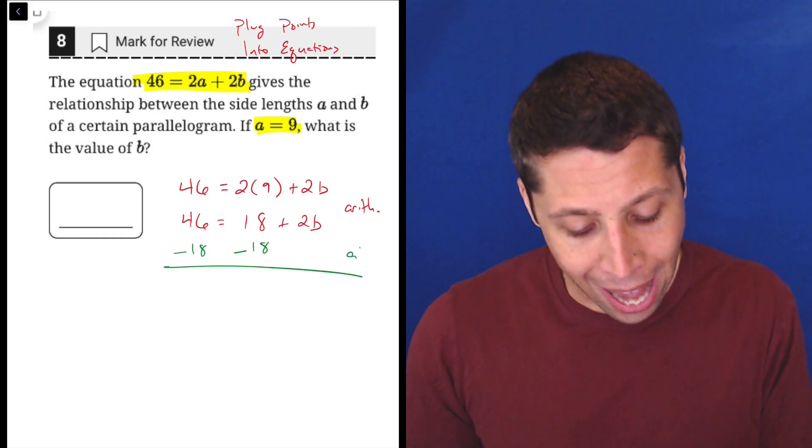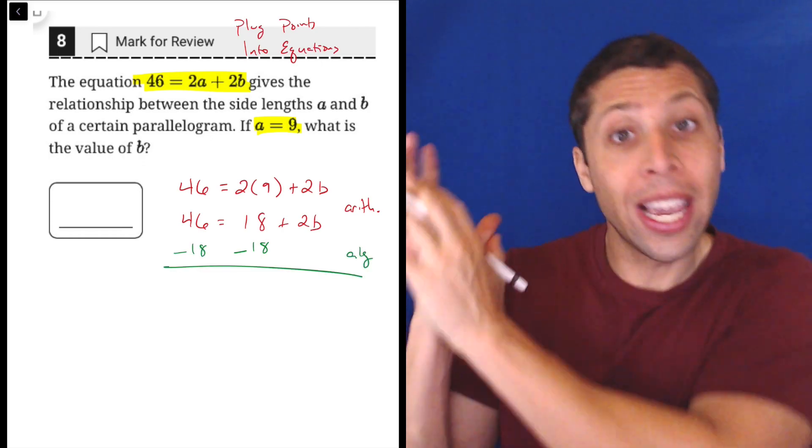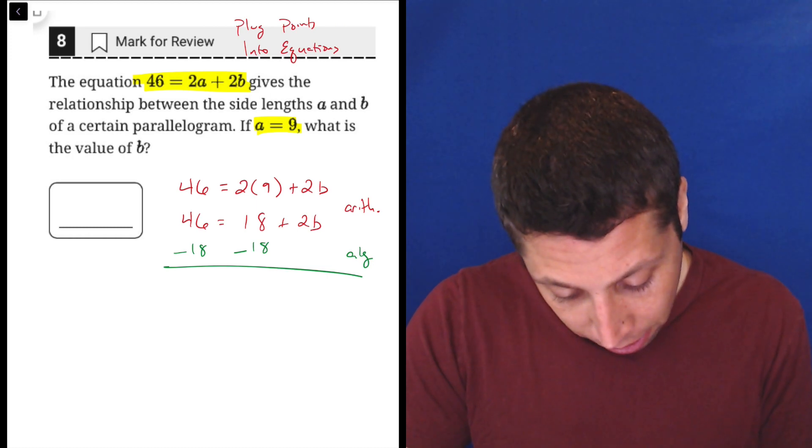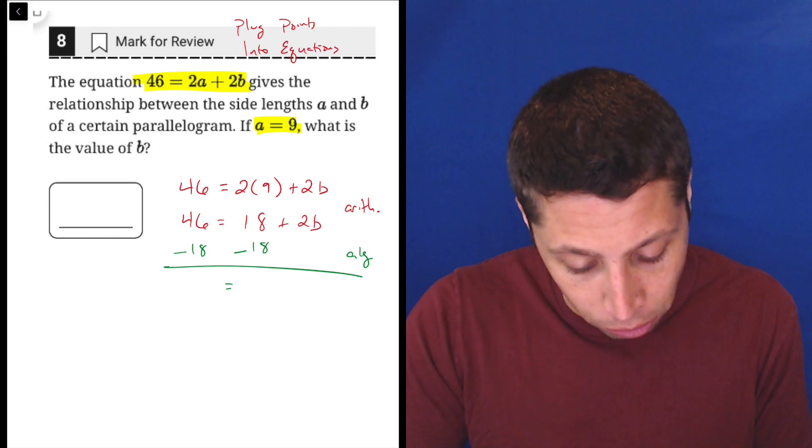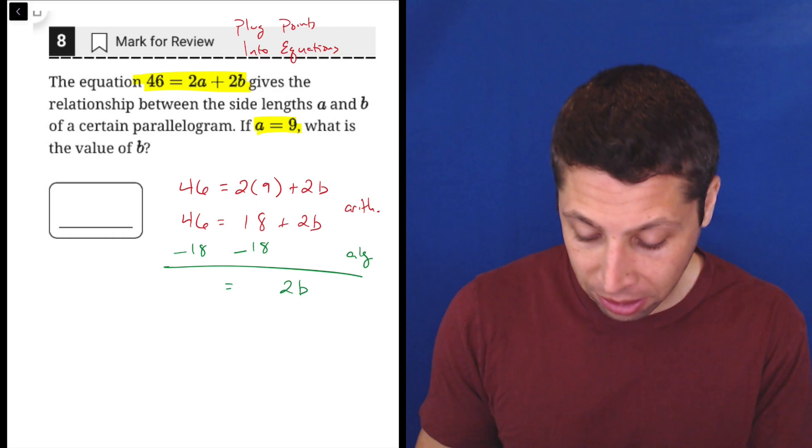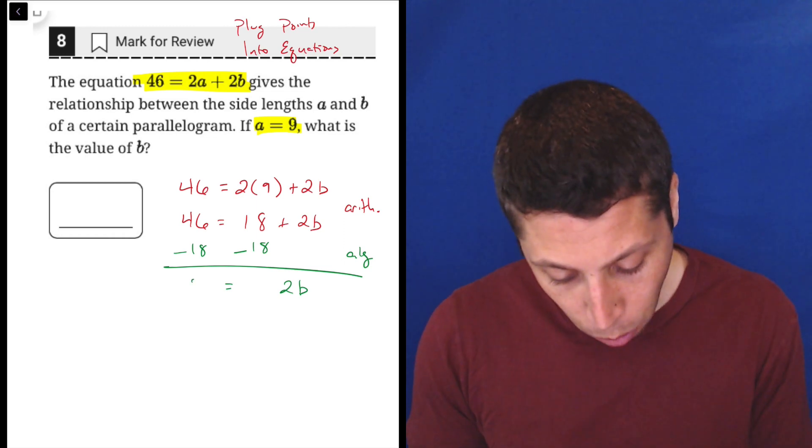So that way we can do some algebra to move the 18 to the other side of the equation. We want to get B alone. So when we do that, we get the 18 minus 18 is zero. So that just leaves 2B on this side. And then here's where I would use my handheld calculator. 46 minus 18 is 28.